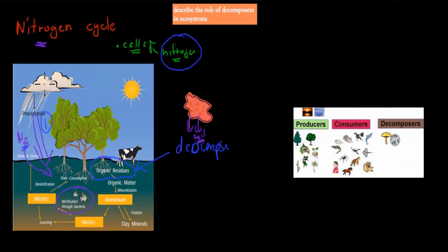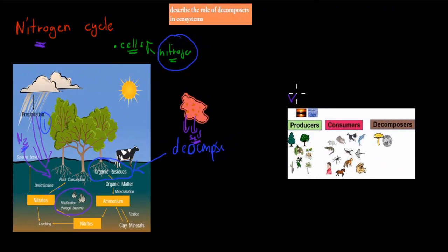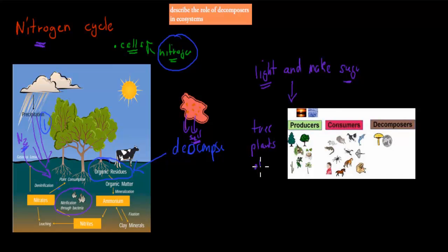Now, we're going to have a couple of different terms. Producers are organisms that use light and make their own energy. They make their own sugar, they make their own food. So they use sunlight to make sugar. These are, for example, our trees, our plants, and some of our algae as well. These can use light to produce sugar.